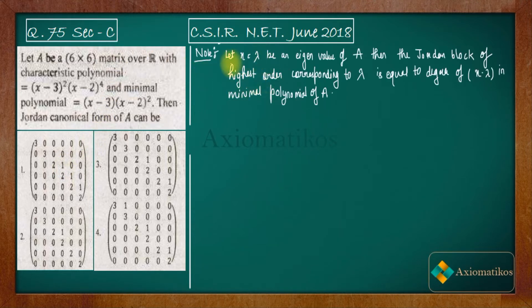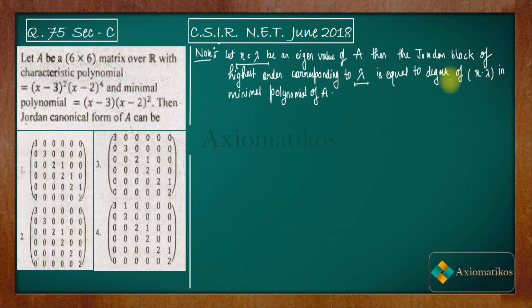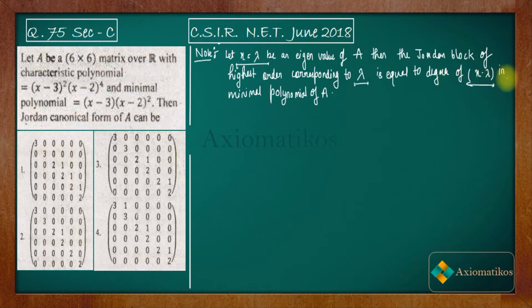Here is an important note: if x equals lambda is an eigenvalue, the highest order Jordan block corresponding to lambda is equal to the degree of (x−lambda) in the minimal polynomial of A.